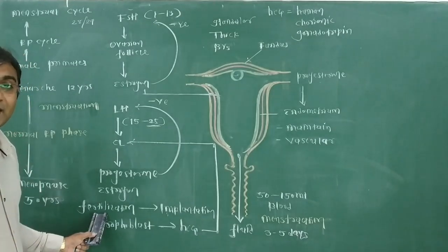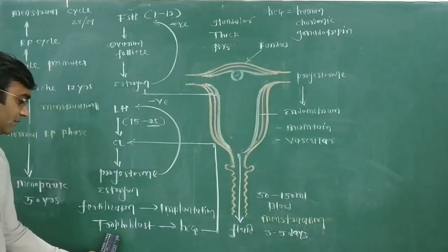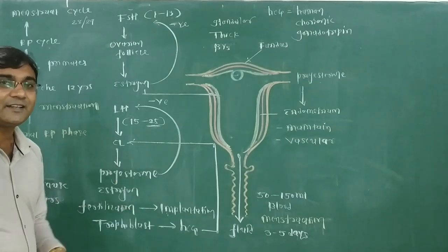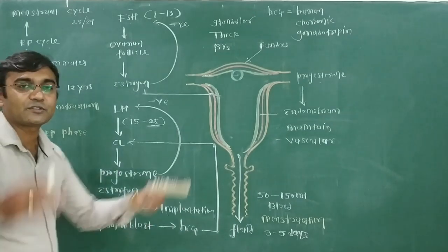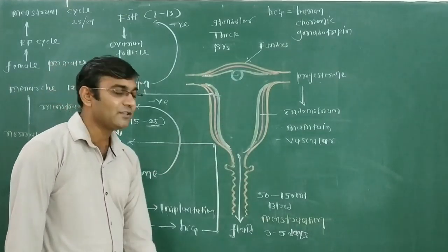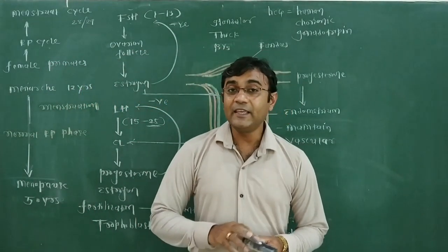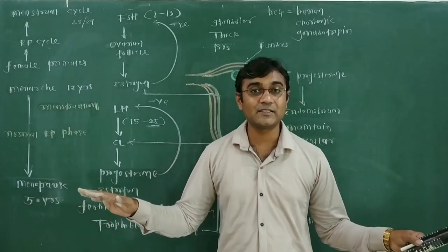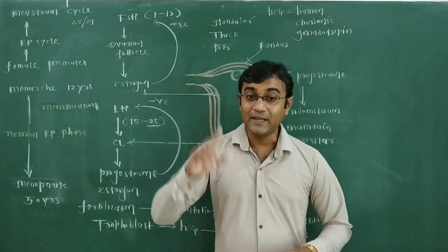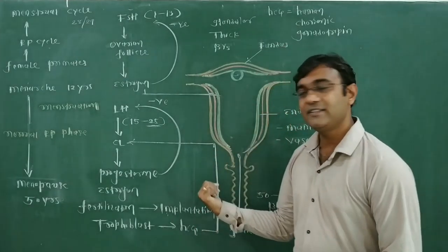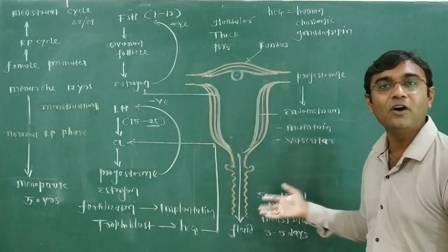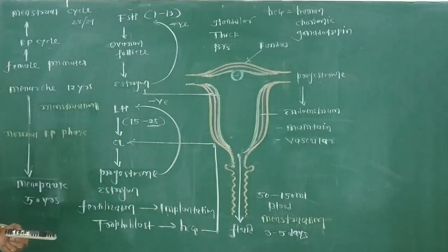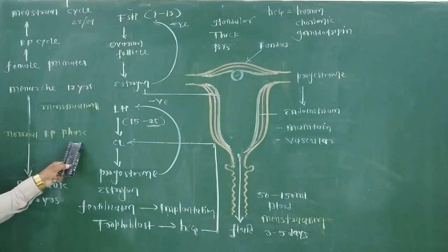Now, suppose the ovum is not fertilized: no fertilization → no implantation → no trophoblast → no HCG → corpus luteum degenerates → progesterone decreases → endometrium breaks → menstruation flow. So two situations: if fertilization occurs, menstruation stops; no events related to menstruation occur during pregnancy. But if there is no fertilization, no HCG, corpus luteum breaks, and menstruation flow runs continuously — indicating the normal reproductive phase inside the animal.